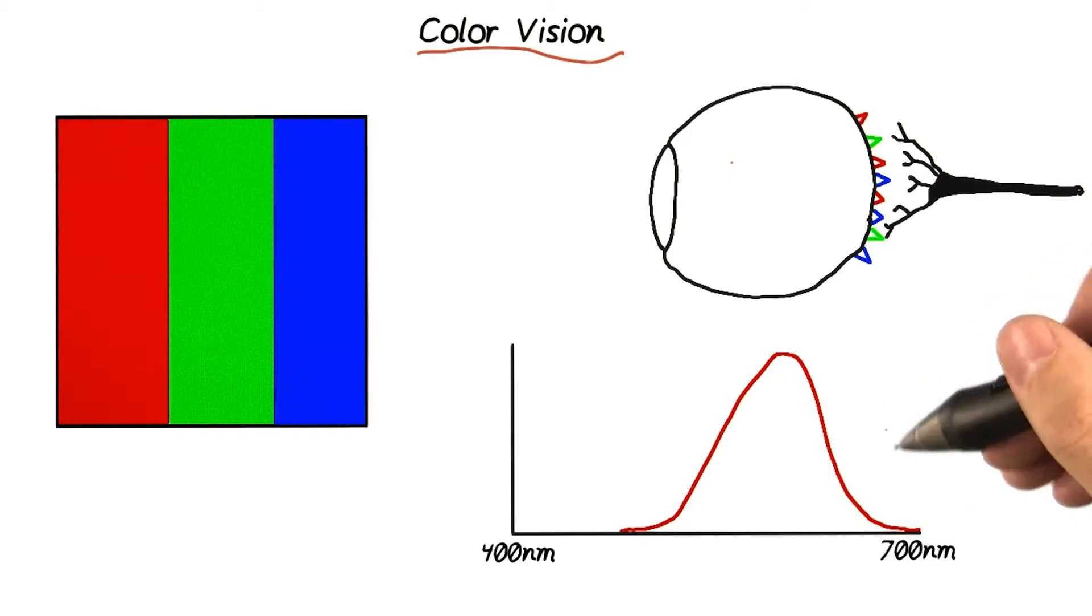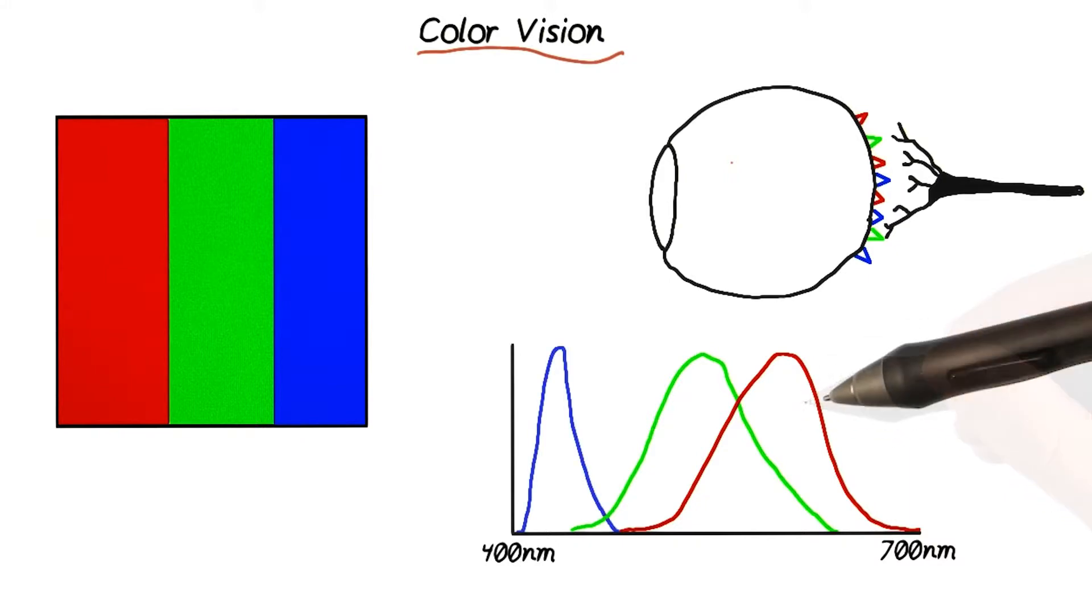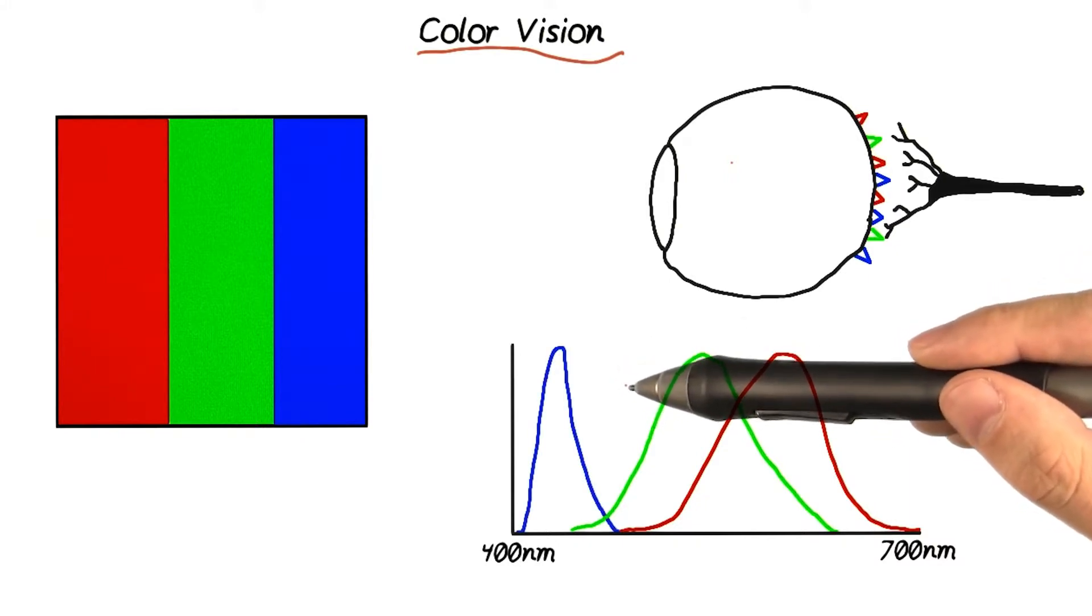If a photon falls in the range of the L, or long wavelength cone cell, our brain perceives it as red. If the wavelength is a little shorter and it falls into an M, or medium cone cell, then it looks green. And if the photon has a super short wavelength and stimulates the S cone, it appears blue.